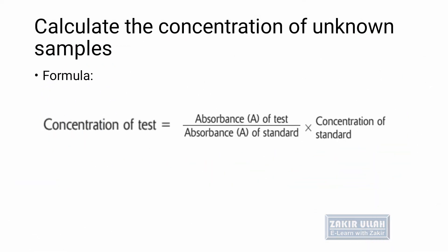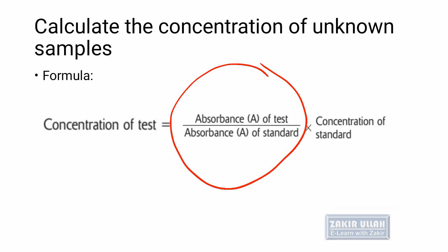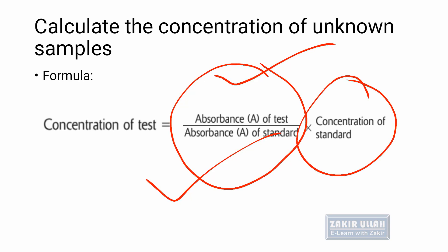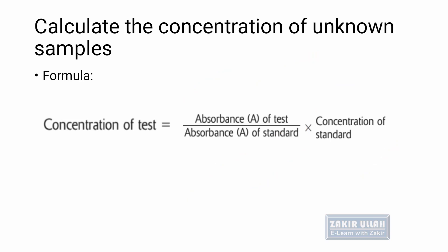After taking the absorbance of the test solution, we can calculate the concentration of the unknown solution using this formula: the concentration of the test solution is determined by dividing the absorbance of the test solution by the absorbance of the standard, then multiplying by the concentration of the standard. With the colorimeter, we can measure both absorbances, and since the concentration of the standard is known, we can calculate the unknown.